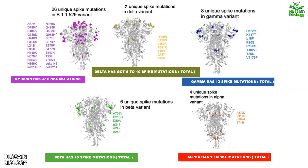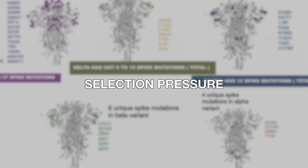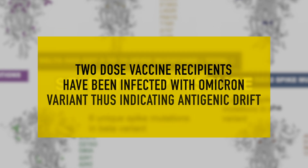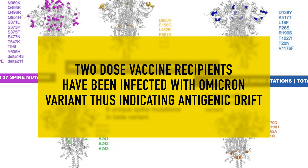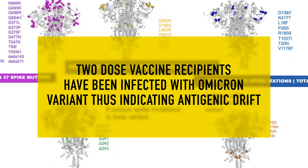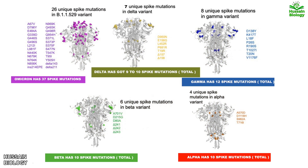One thing is certain: we are seeing a large number of mutations taking place in the SARS-CoV-2 genome. This is all due to selection pressure — if there is no selection pressure, the virus would be eliminated, which is how evolution comes into play. There are also reports that two-dose vaccine recipients have been infected with the Omicron variant, indicating antigenic drift. There are assumptions that more transmissibility means less severity and vice versa, but let's see what upcoming data from the Omicron variant reveals.